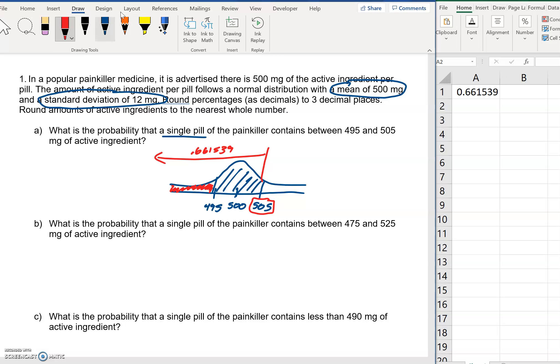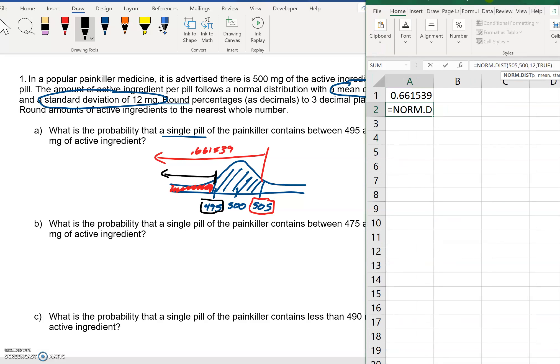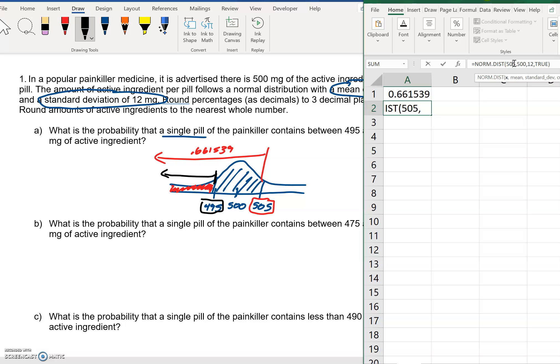So that's this stuff, 0.661539, et cetera. So then we want to say, how about from 495? So this is the stuff that we kind of want to take away because we overcounted. There's too much. So let's figure out what that area is. Well, it looks very similar to what we just did. So I can just copy and paste this and then go into my formula bar. And instead of 505, just change this to 495. The rest of it's the same. The mean, the standard deviation, and true. So the area that we don't want is 0.338, et cetera.